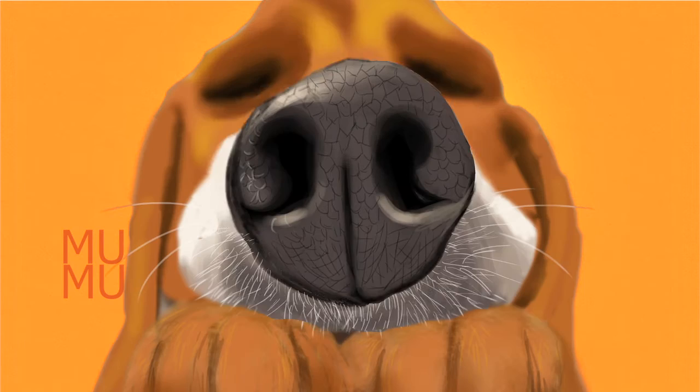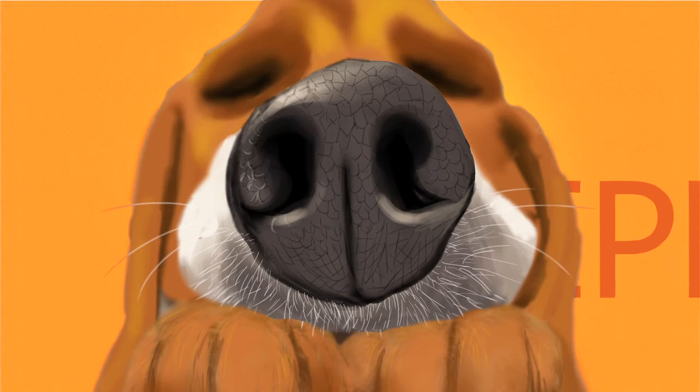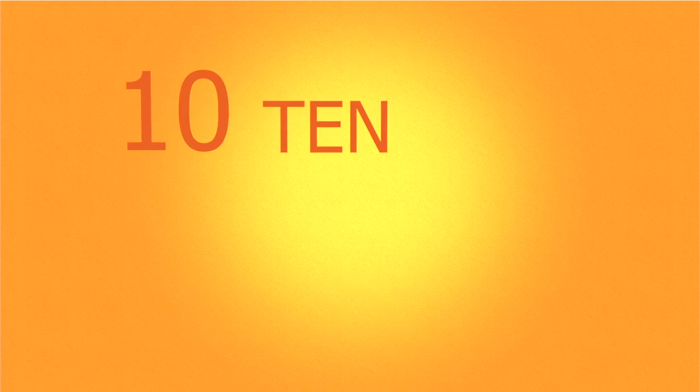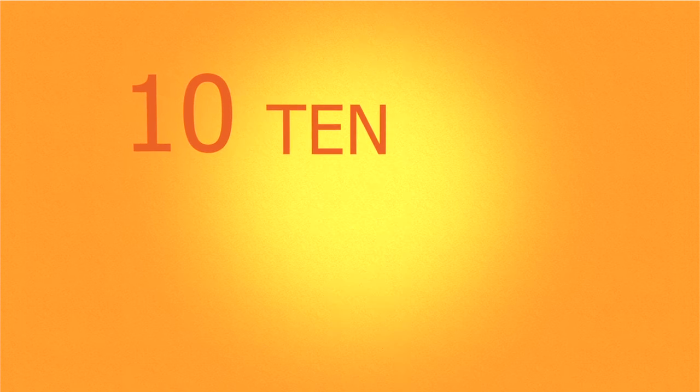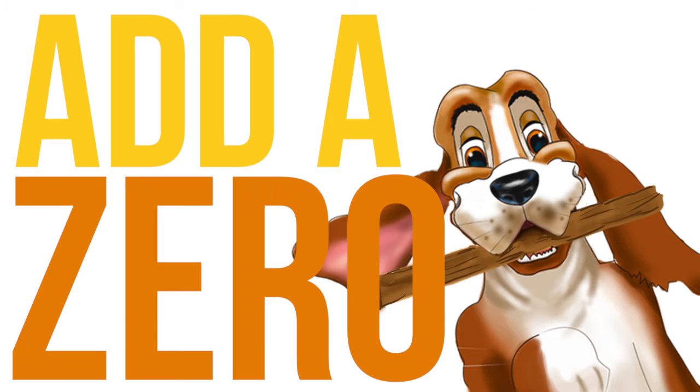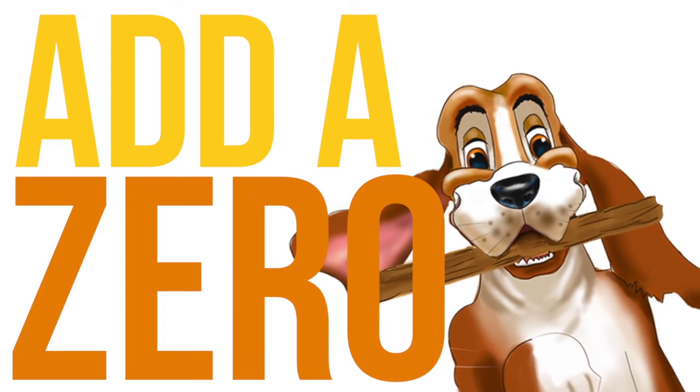My name is Duke. I'm a hound. Everywhere I travel, I have found that if you multiply by the number 10, you'll always have zeros in your number at the end.